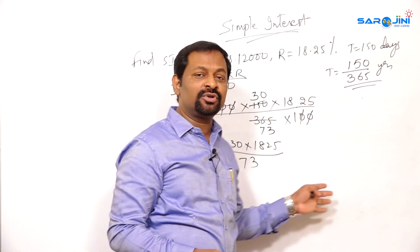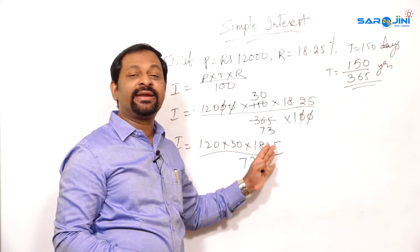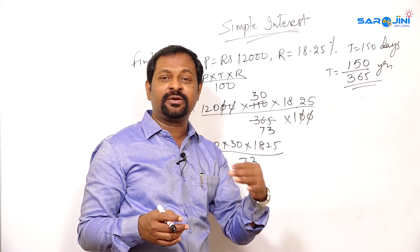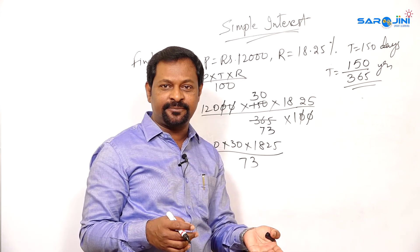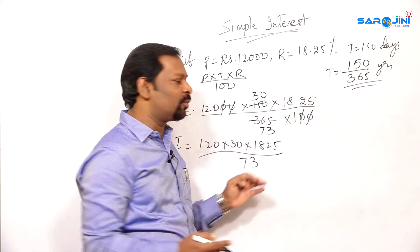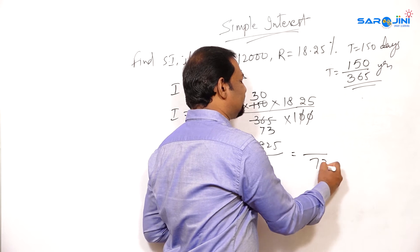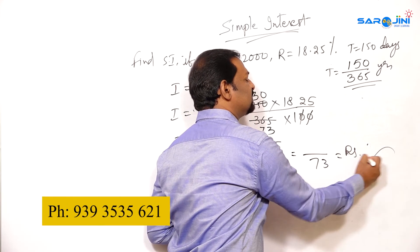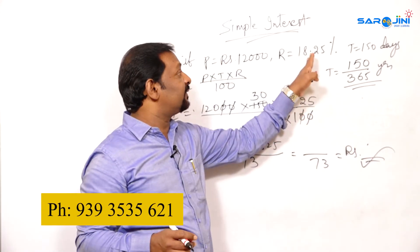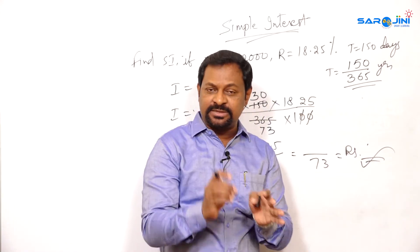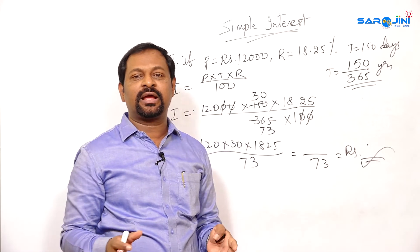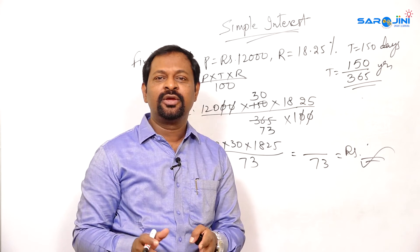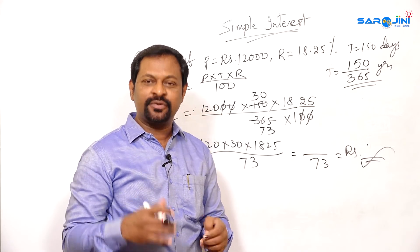Now we check whether further cancellation is possible. You can calculate the numerator part and divide by 73 — that will be the simple interest amount. Sometimes when the rate of interest is in decimal, the total amount will also come in rupees and paise. So in this way you can calculate.